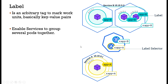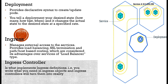Labels are arbitrary tags used to mark units — basically key-value pairs — that enable services to group several pods together. Deployment provides the declarative syntax to create and update pods. You tell your deployment the desired state of your cluster — how many pods should run, how fast, and when — and it changes the actual state to the desired state.